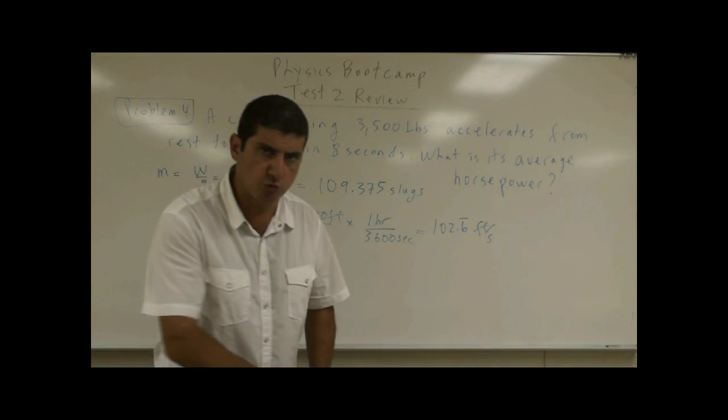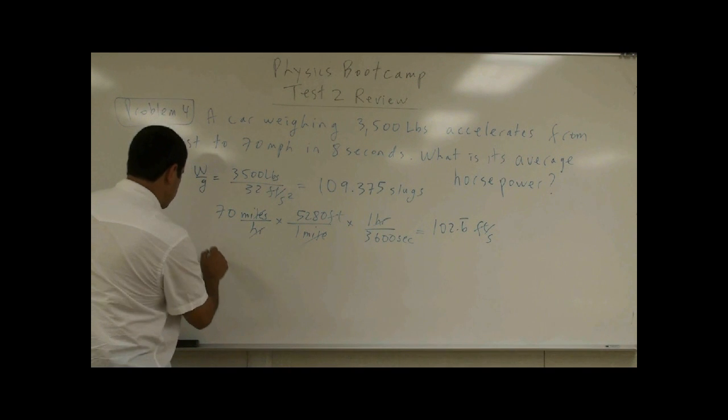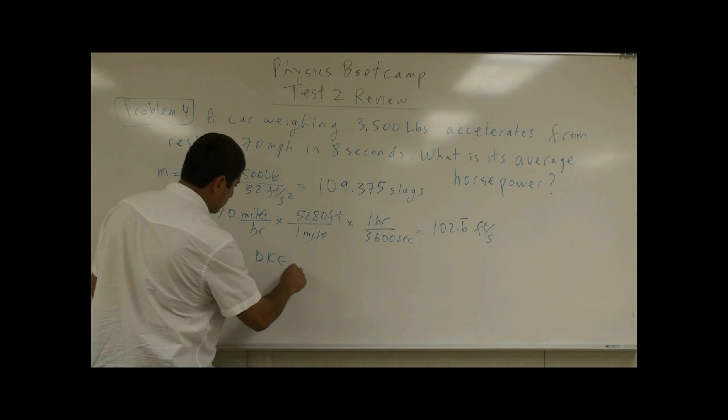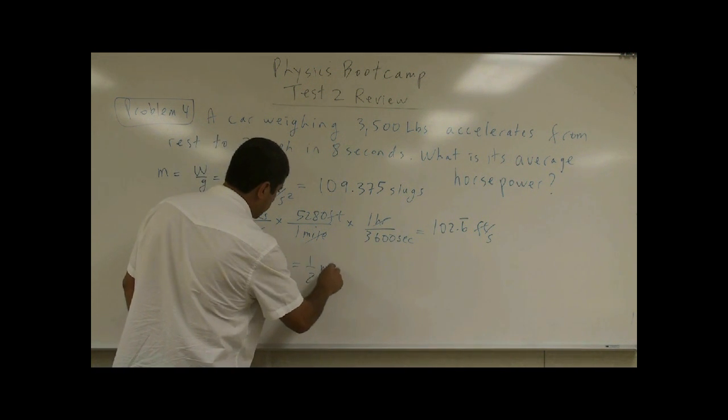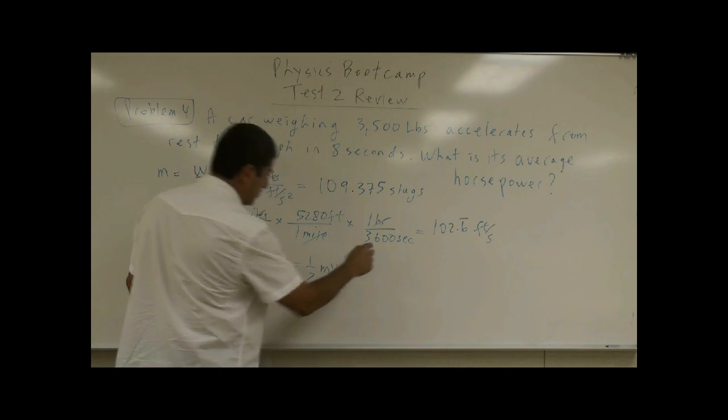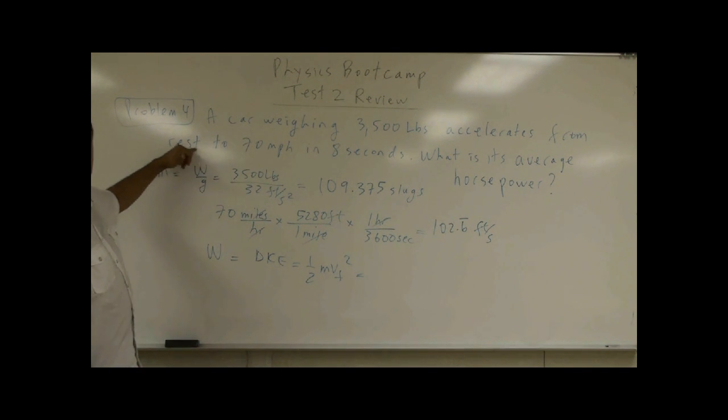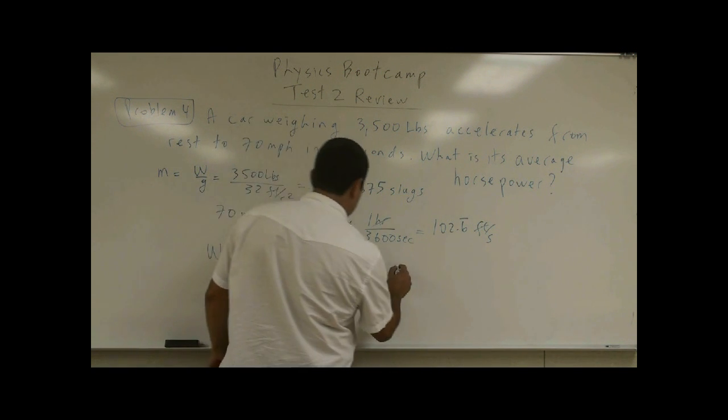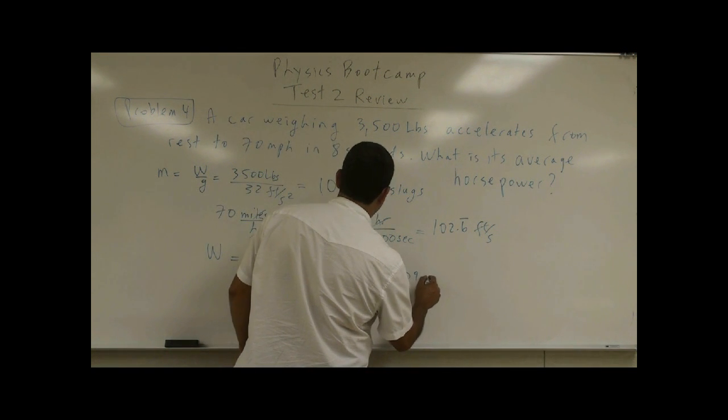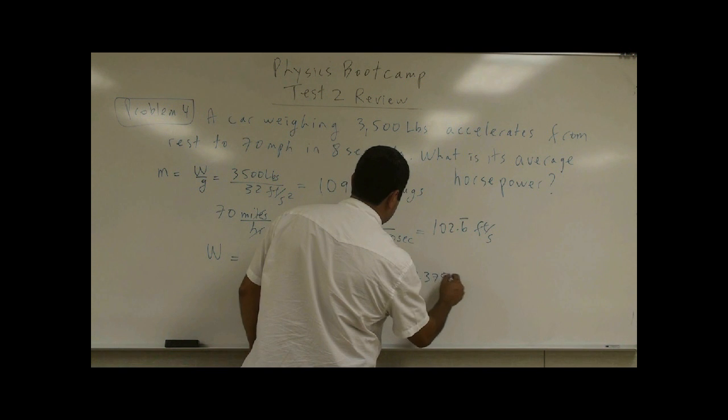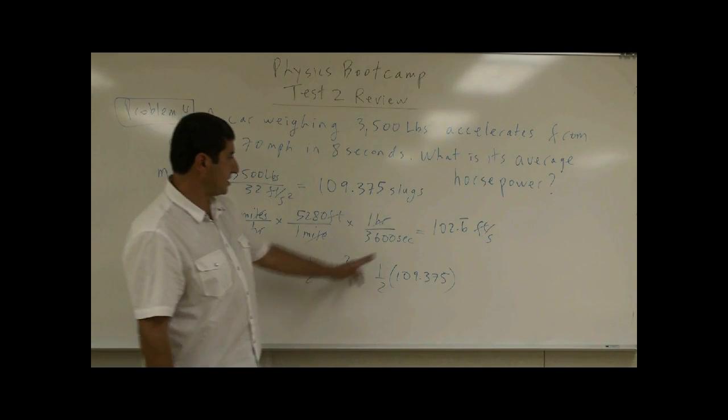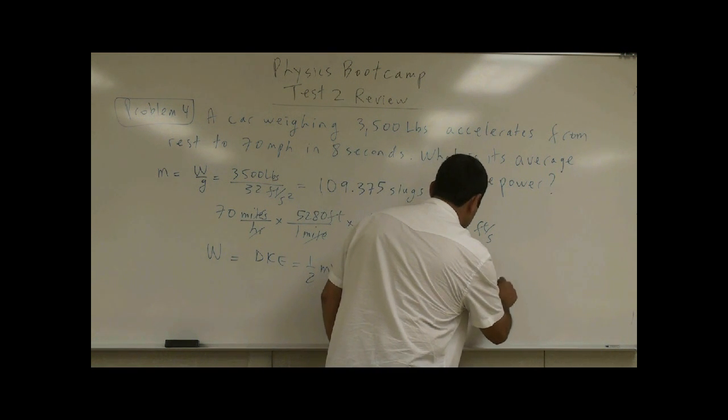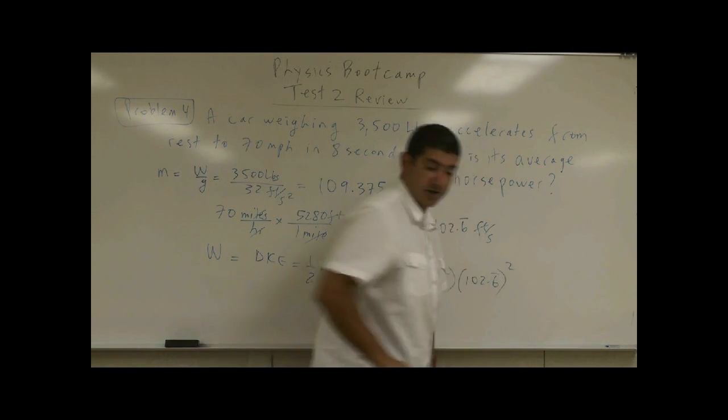So now we can say what is the work done by the car? The work done is equal to changing kinetic energy, which equals one half mass times final velocity squared, where the initial velocity is zero since the car starts from rest. So one half, what's the mass? 109.375. And then the velocity is 102.6 repeating six. And then you square that.